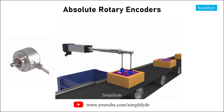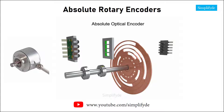Absolute encoders are used in many applications that require speed, position, angular displacement, and directional feedback. An encoder is a device that converts linear or rotary movement into digital or pulse signals.